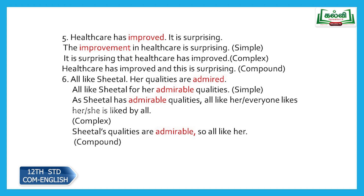Sixth: 'All like Sheetal. Her qualities are admired.' The clue word is 'admire' — convert it into an adjective: admirable qualities. Simple: all like Sheetal for her admirable qualities. Complex: as Sheetal has admirable qualities, all like her. Compound: Sheetal's qualities are admirable and all like her.